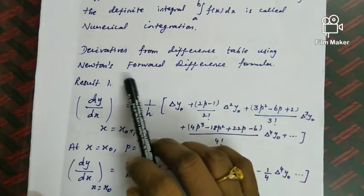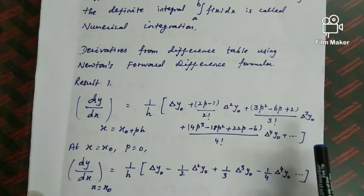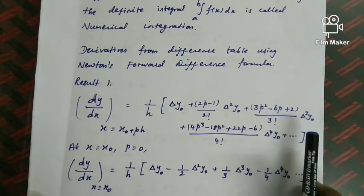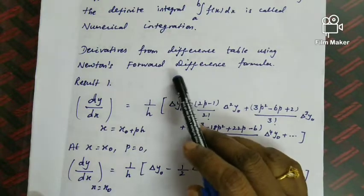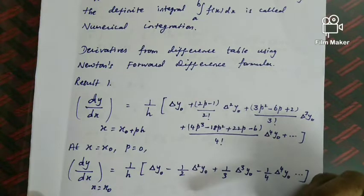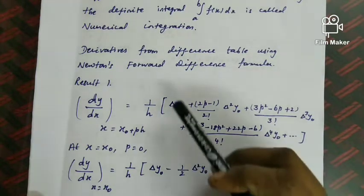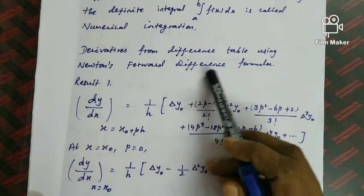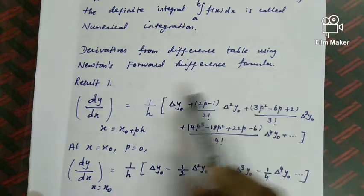Derivatives from difference table using Newton's forward difference formula. Newton's forward and backward difference formulas were already discussed in Unit 2. Forward difference is used when the given x value is near the beginning of the table; backward difference is used when x is near the end of the table. This is used for finding the derivatives of given tabulated values.